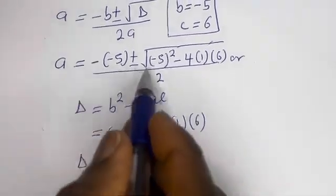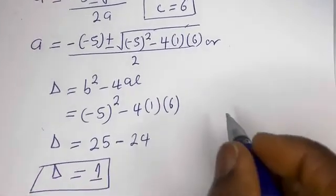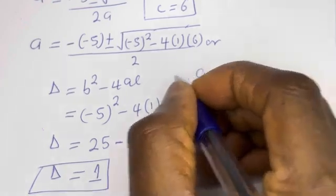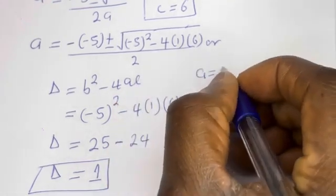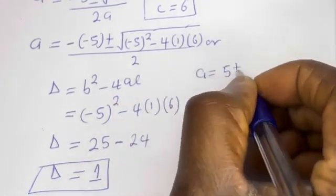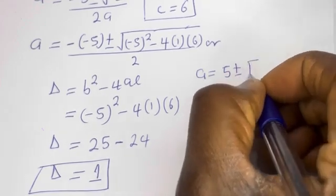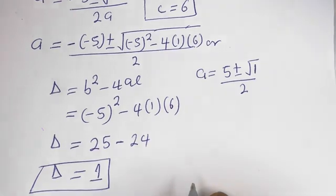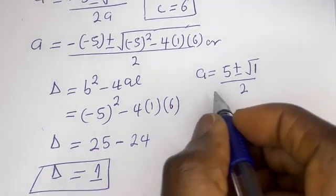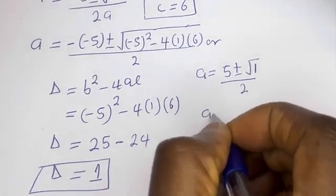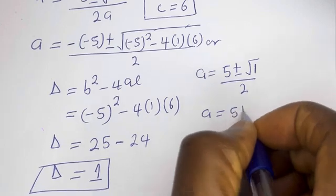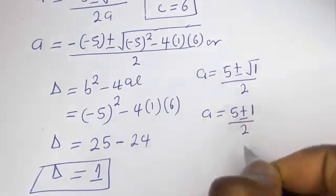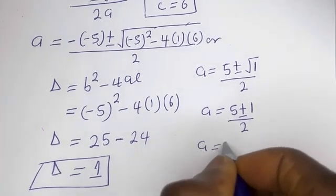Let's substitute back. We have a is equal to 5 plus or minus the square root of 1, all over 2. Since the square root of 1 is 1, a is equal to 5 plus or minus 1, over 2.